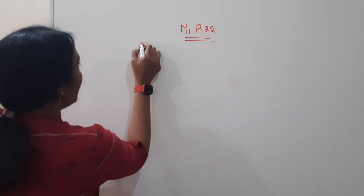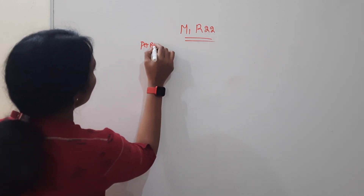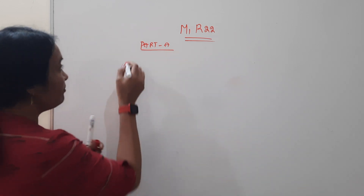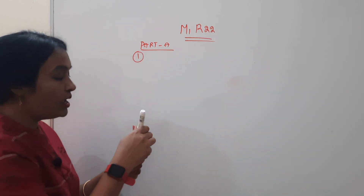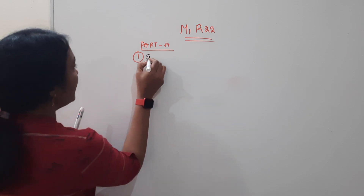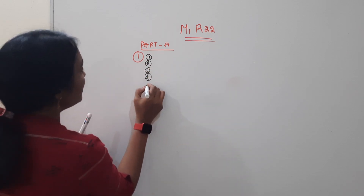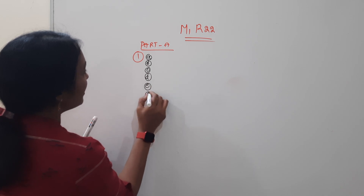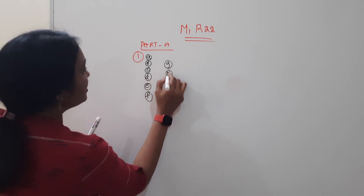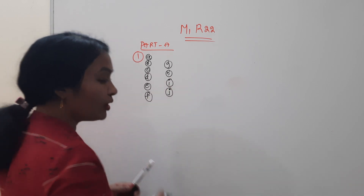I am going to talk about Part A and Part B. I am going to talk about A to J questions. A, B, C, D, E, F, G, H, I, J.